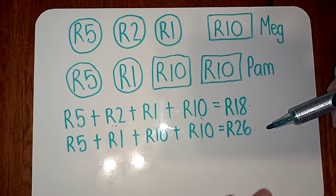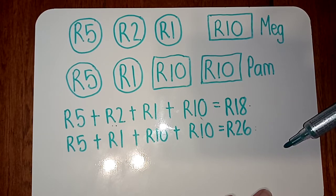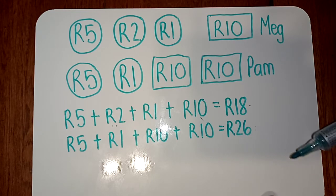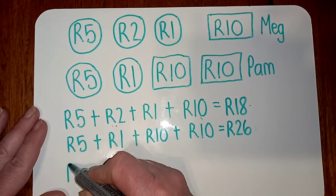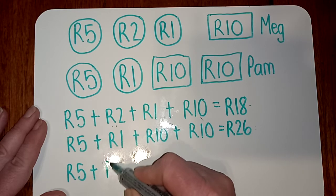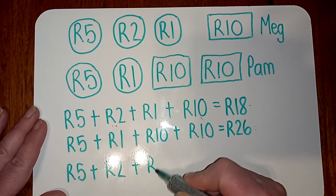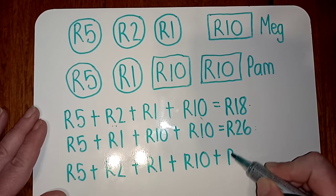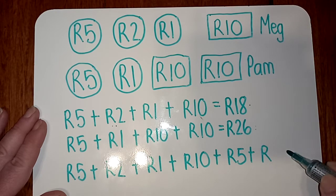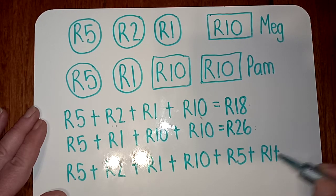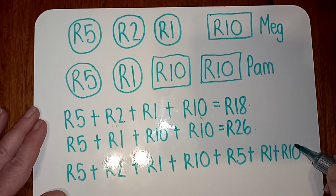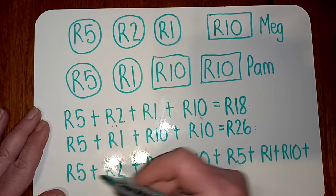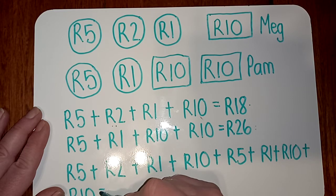And then how much did they have all together? Now we're going to have to make one big long sum and add this all together. So let's have a look. Five Rand, plus two Rand, plus one Rand, plus ten Rand, plus five Rand, plus one Rand, plus ten Rand, plus ten Rand, plus ten Rand.